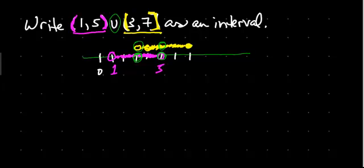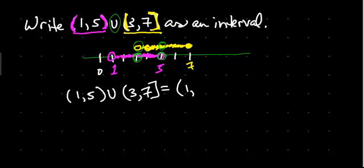One open and seven closed is in the union. So we see that this union, (1,5) union (3,7], equals—I don't get 1 but I go up to 7 and I get 7, so it is a closed bracket. So that is the union of the open interval (1,5) with the half-open interval (3,7].